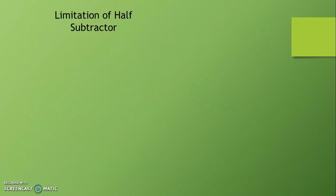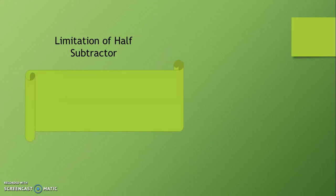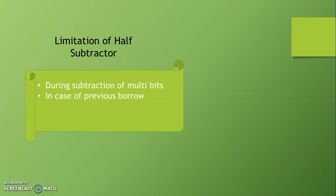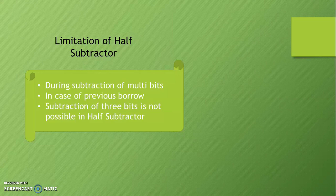Now let us verify the limitation of the half subtractor. During subtraction of multi-bit numbers, it is possible that we have a borrow from the previous stage. In that case, subtraction of three bits simultaneously is not possible in a half subtractor — that is one of its major limitations. We can use a half subtractor only for subtraction of two binary bits. To overcome this limitation, we have to use a full subtractor.